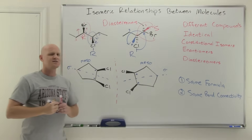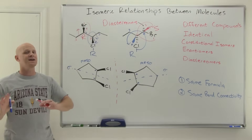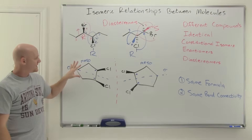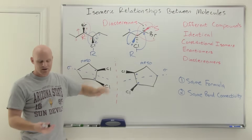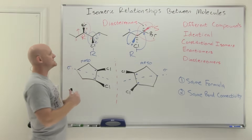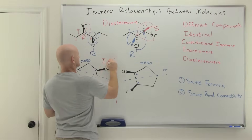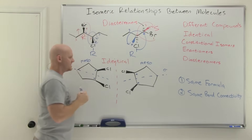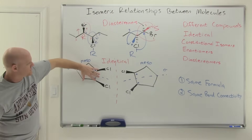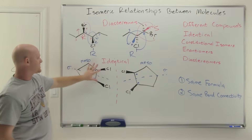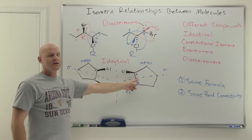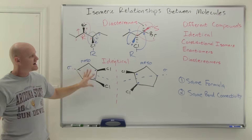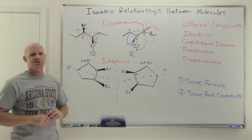I didn't actually need to identify them as meso — I just needed to figure out they're achiral. An achiral molecule and its mirror image are identical. In fact, if you rotate one 180 degrees it superimposes perfectly on the other. They are exactly the same structure.